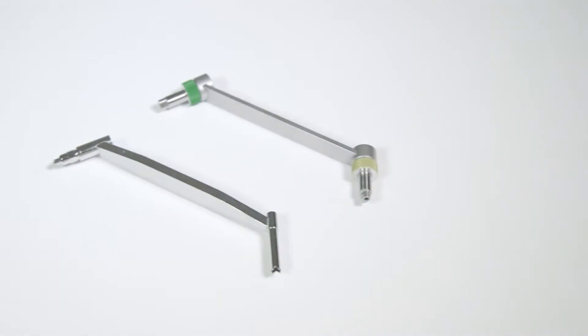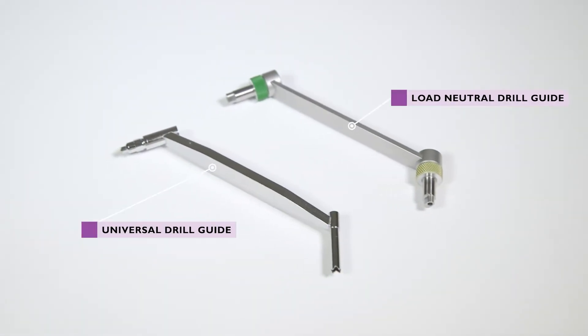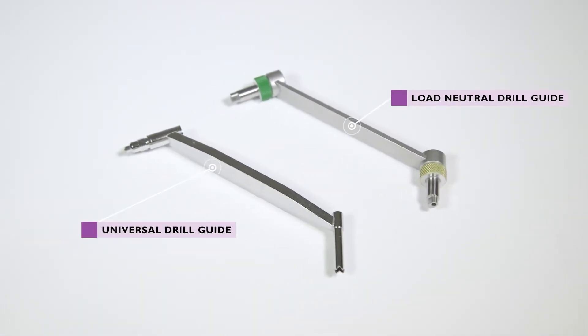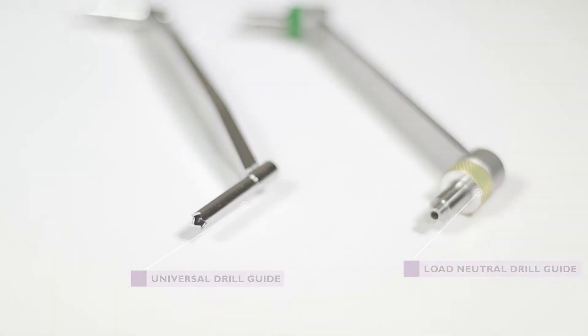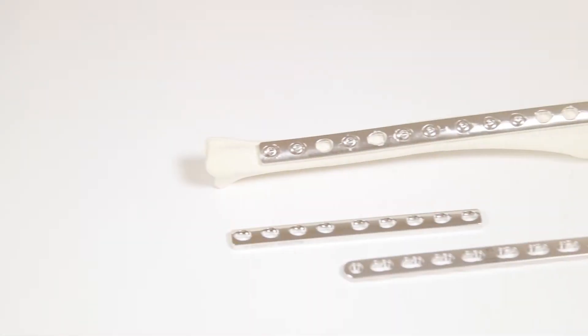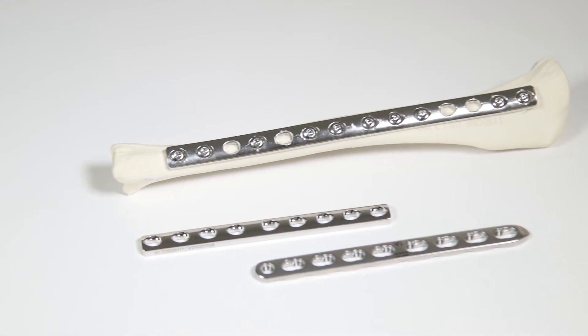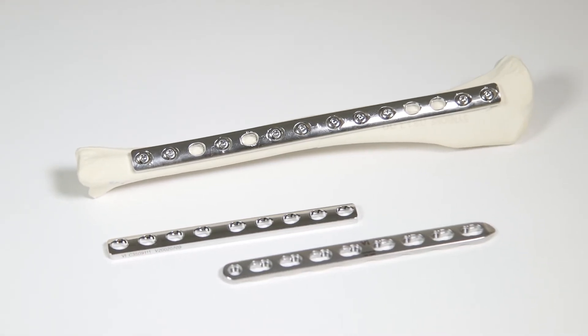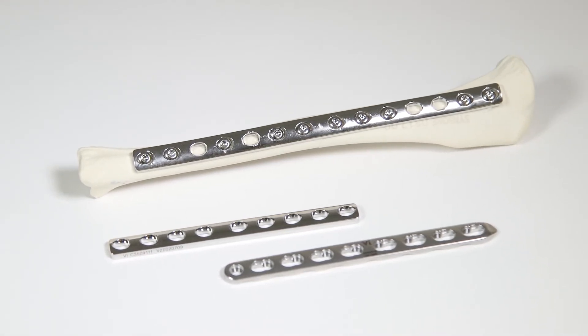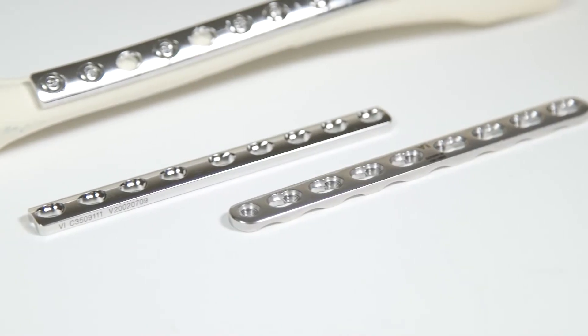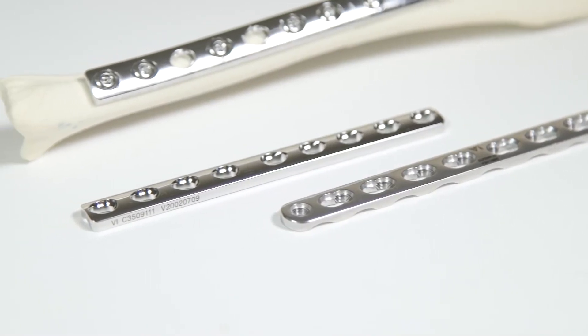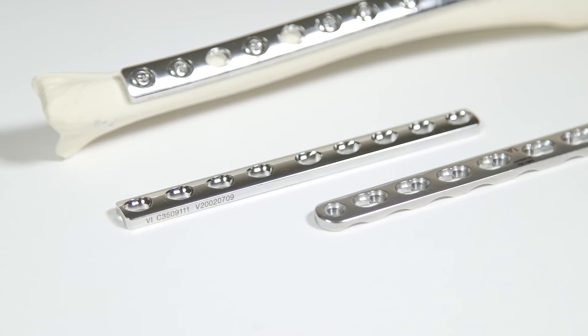These devices are used to achieve accurate placement of pilot drill holes when placing a plate in compression mode. Correct screw placement is essential to creating axial compression across a fracture. The Load Neutral Drill Guide and the Universal Drill Guide help achieve accurate screw placement.